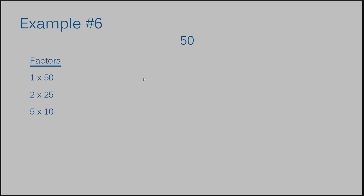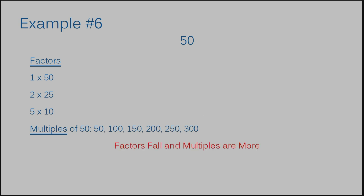Example number six: factors of 50. We have 1 times 50, 2 times 25, and 5 times 10 — and that's it. Between 5 and 10, none of the counting numbers can go into 50 evenly — 6, 7, 8, and 9 cannot — so none of them get listed. Ten was already listed with your 5 times 10, so you're done. The multiples of 50 are: 50, 100, 150, 200, 250, 300, and so on. Remember: factors fall — all factors of 50 are smaller than 50 — and multiples are more — all multiples are larger than 50. That's my biggest tip so you don't get the two mixed up.